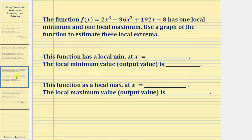The function f of x equals 2x cubed minus 36x squared plus 192x plus 8 has one local minimum and one local maximum. We're asked to use a graph of the function to estimate the local extrema and notice how we're asked to determine the location of the local max and min as well as the local maximum value.